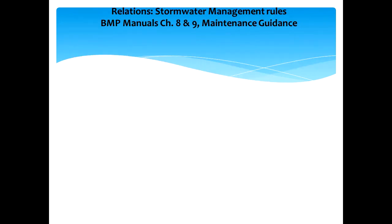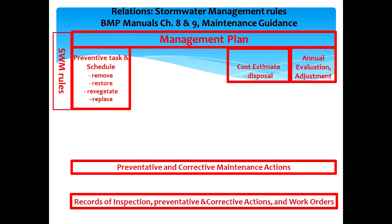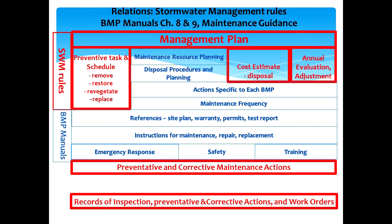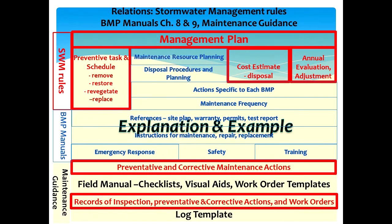Let's first explore the relationships between the stormwater management rules, the NJ Stormwater BMP manuals, and the maintenance guidance. The stormwater management rules set forth the requirements of a maintenance plan for stormwater BMPs. The stormwater BMP manual subchapters 8 and 9 set forth further items to fulfill the rule requirements and to maintain BMP proper functions. The maintenance guidance provides explanations and examples to assist design engineers, responsible parties, and regulatory parties in understanding the maintenance requirements, performing proper maintenance, and complying with the rules. While following the maintenance guidance is not mandatory, it will serve as a valuable tool in assisting design engineers and responsible parties with the maintenance of stormwater BMPs.